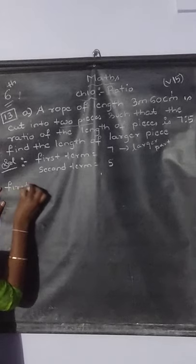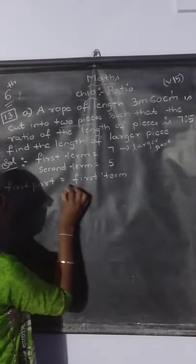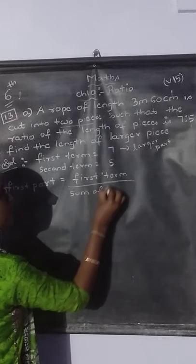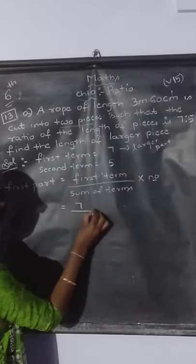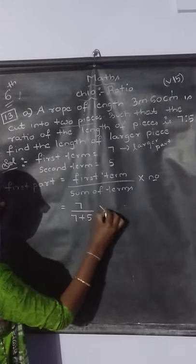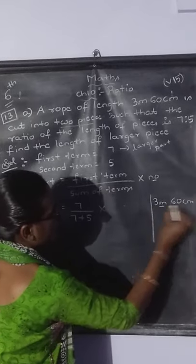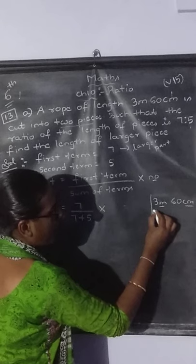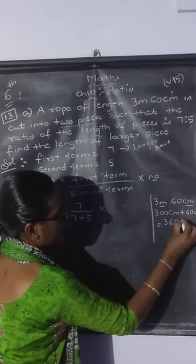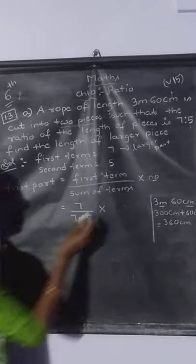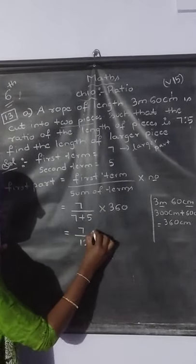So the first part equals first term by sum of terms, into the number. First term is 7, sum of terms is 7 plus 5 equals 12, into the total rope length of 3 meters 60 centimeters. Convert to a single unit: 1 meter is 100 centimeters, so 3 meters is 300 centimeters, plus 60 centimeters equals 360 centimeters. So it is 7 by 12, into 360.